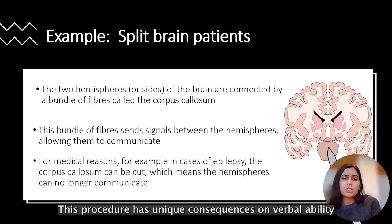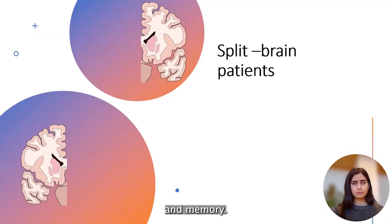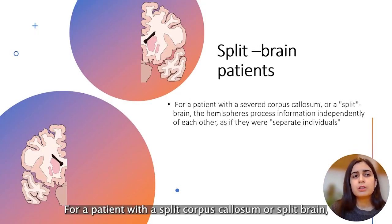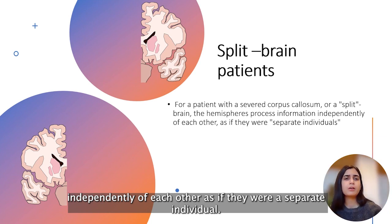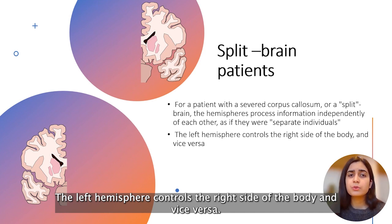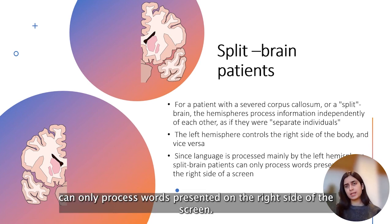This procedure has unique consequences on verbal ability and memory. For a patient with a severed corpus callosum — a split brain — the hemispheres process information independently of each other, as if they were separate individuals. The left hemisphere controls the right side of the body and vice versa. Since language is processed mainly in the left side of the brain, split brain patients can only process words presented on the right side of the screen.